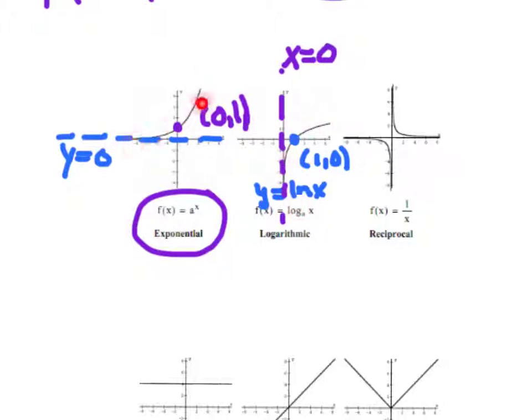That means you can take every point on your exponential, switch the x and y, and it will turn out to be a log graph. For example, zero, one — if you switch the x and y, you get one, zero. That will work for every point.